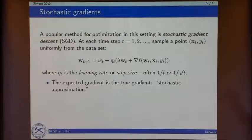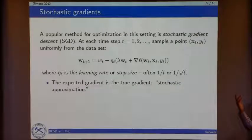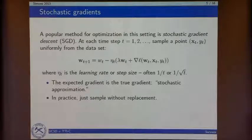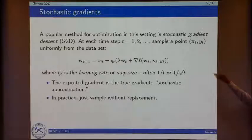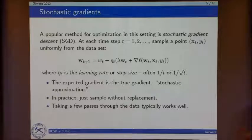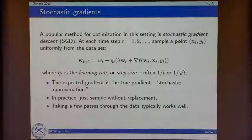The expected gradient, since I'm taking a random data point at each time, is the true gradient — so this is really just a stochastic approximation to standard gradient descent. You can do your Robbins-Monro type analysis. In practice, people sample without replacement, just doing a scan through the data processing each point one at a time. The theoretical guarantees are usually for the sampling model, but in practice you take a few passes through the data and you're about as good as you'd be with full gradient descent.